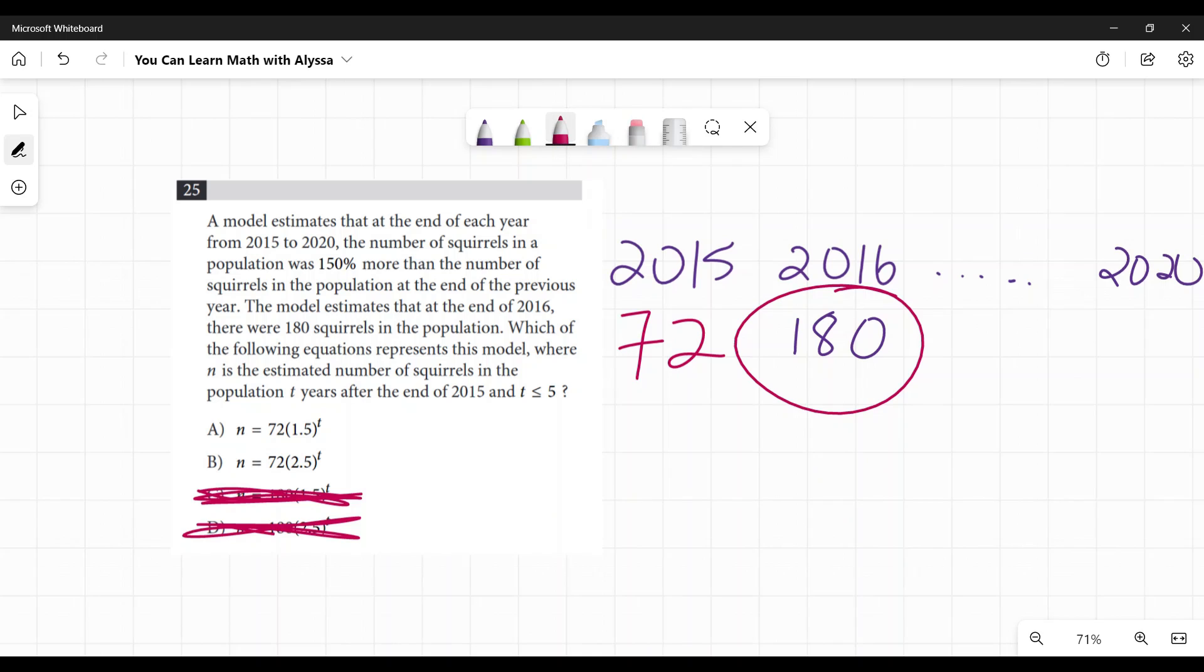So here, by them only giving us the options of 72 or 180, and since we know we're starting in 2015, a year earlier when there were fewer squirrels, we know it can't be 180 as our beginning number. It has to be 72.